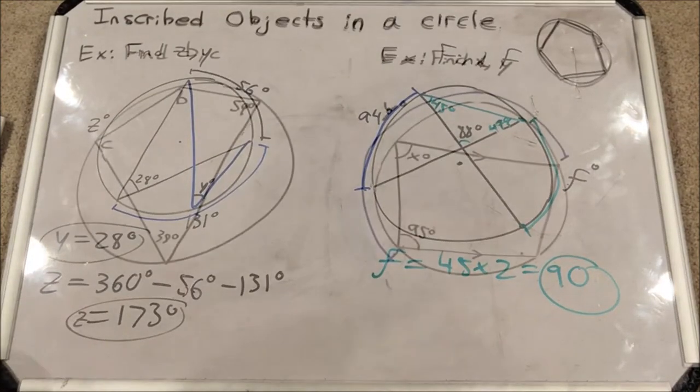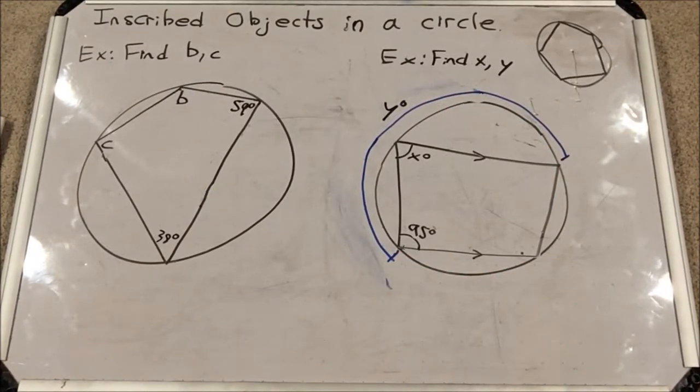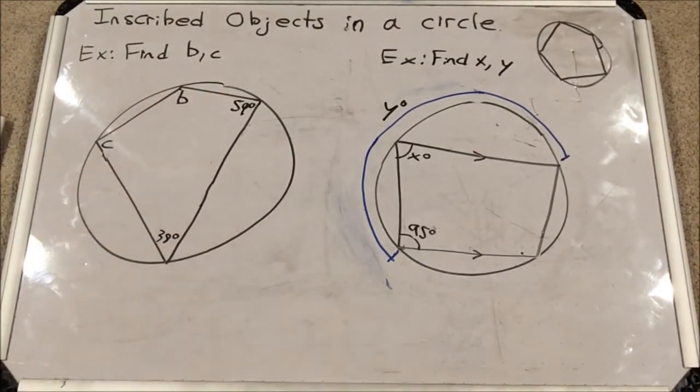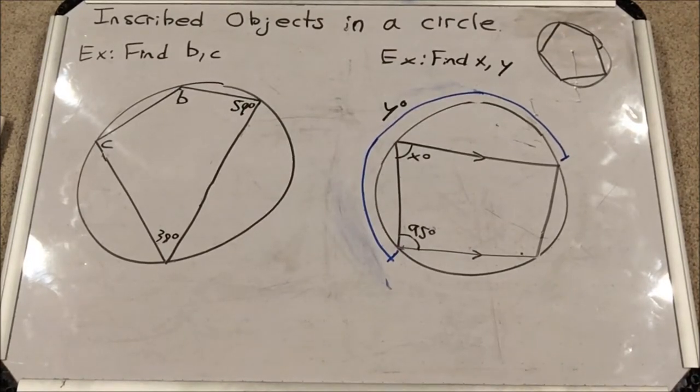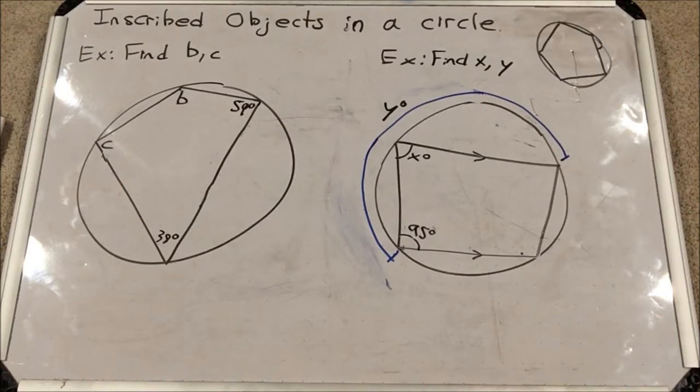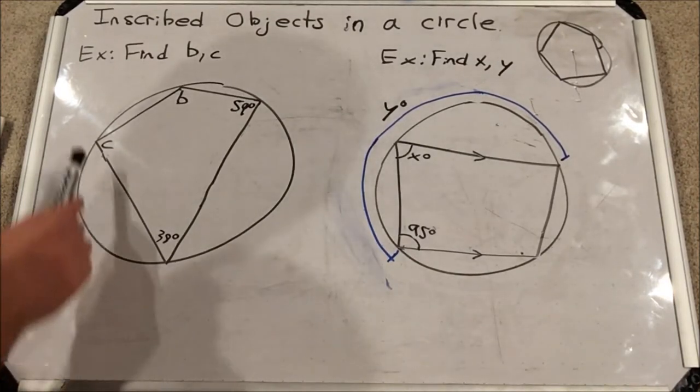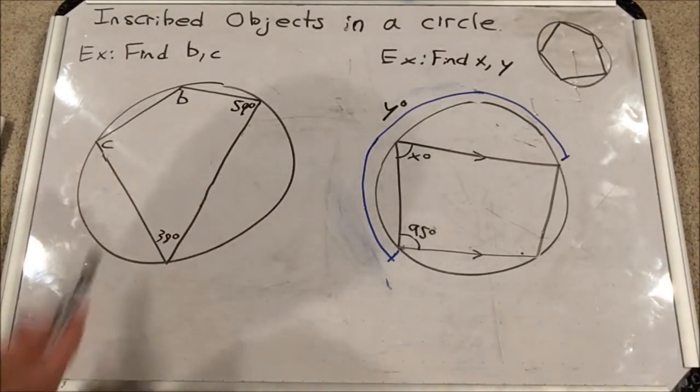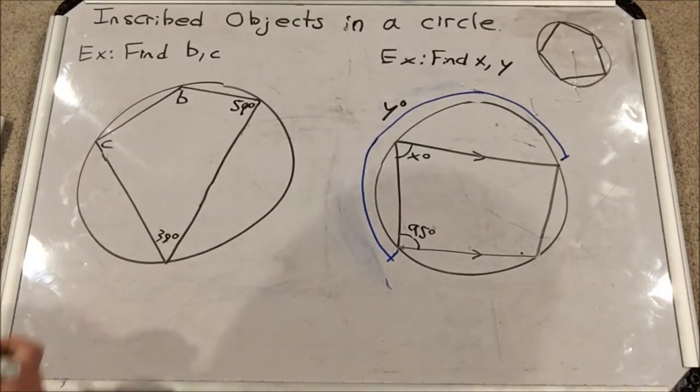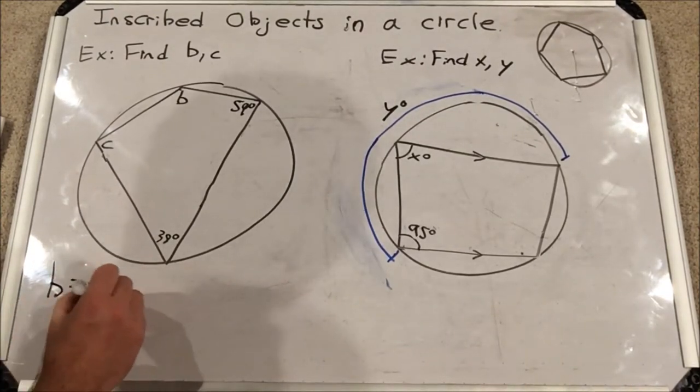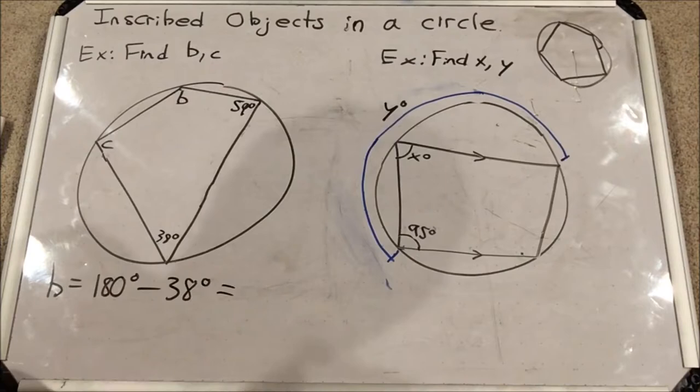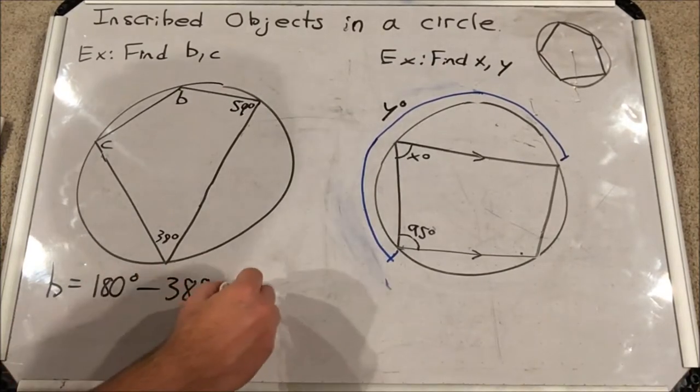So we have two cyclic quadrilateral problems for you. This first one is a pretty basic one where you're given two angles in the quadrilateral and asked to find the other two. Remember, opposite angles in quadrilaterals that are inscribed in circles are supplementary. Also remember that it has to have all the vertices touching the circle for this to work. So let's find b. Well, b and 38 have to add up to 180, so b would be 180 degrees minus 38 degrees. And if you do that subtraction, you get 142.